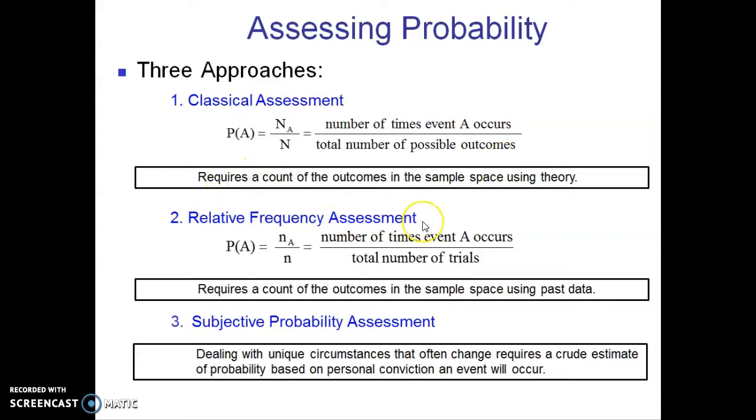In contrast, the relative frequency assessment calculates probability with the same numerator, the number of time the event occurs, but it's divided by the number of trials, which is using past data rather than theory. For example, if we wanted to determine the probability of being the victim of identity theft, we might look at the number of times people were victims of identity theft last year, divided by the total number of people. If we wanted to estimate the probability of getting an A in this class, we might look at the number of A's that occurred last year and divide it by the number of students that took this class last year. The key is we're using past data to assemble the denominator, not theory, which makes the denominator variable from one study to the next.